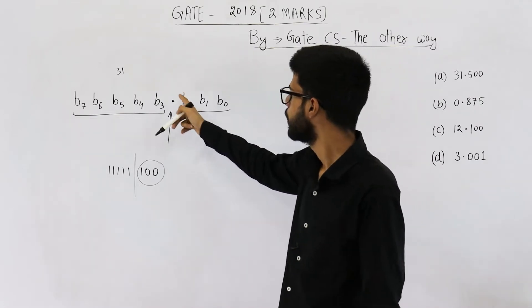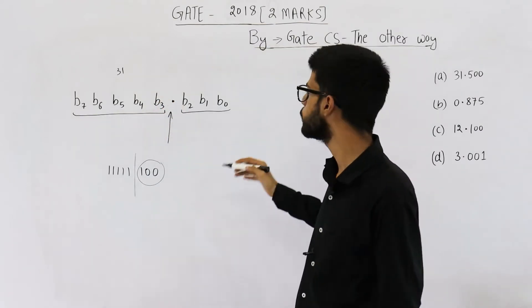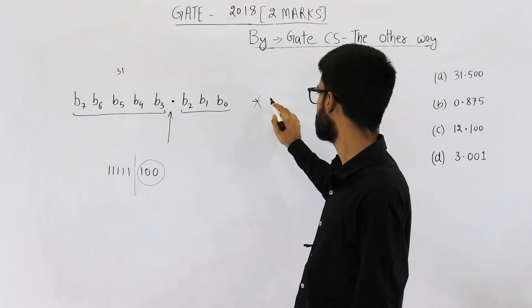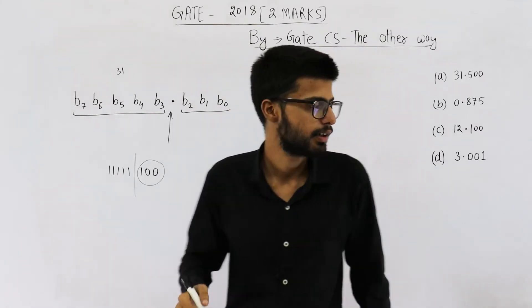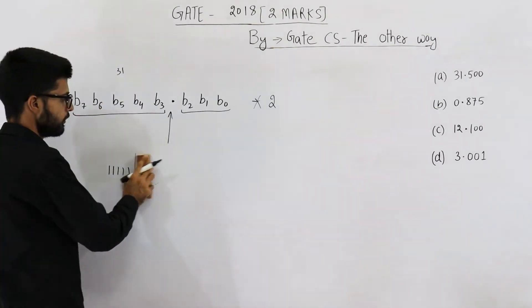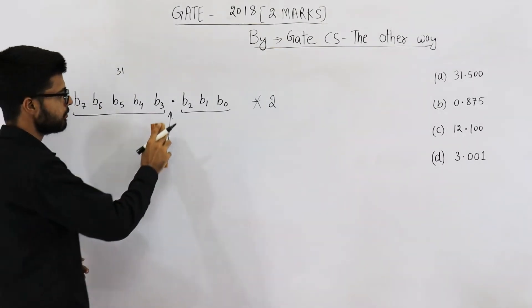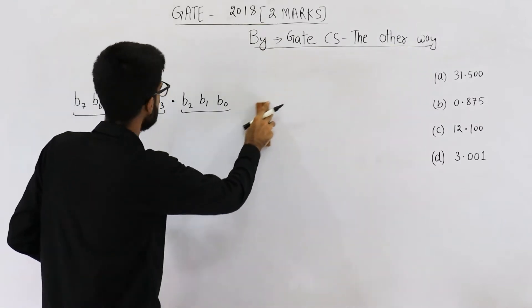Unlike floating point numbers, you cannot just move this radix point. In floating point, we just multiply with 2 raised to the power something and we can just move this radix point. That's not allowed here. Such number systems are very easy to implement. You don't have to worry about exponent and all.